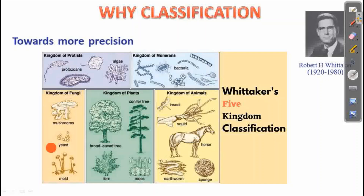This is called Whittaker's Five Kingdom Classification. The five kingdoms are: Monera, Protista, Fungi, Plantae, and Animalia.